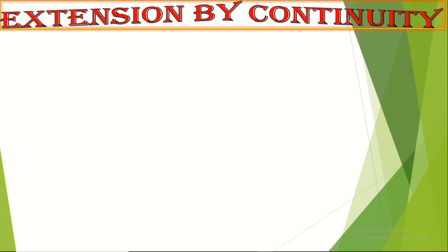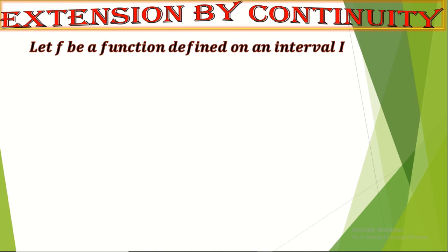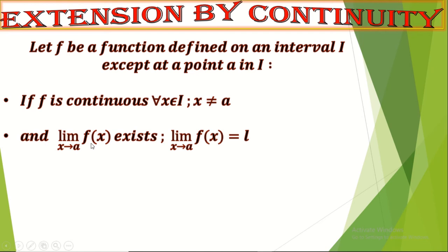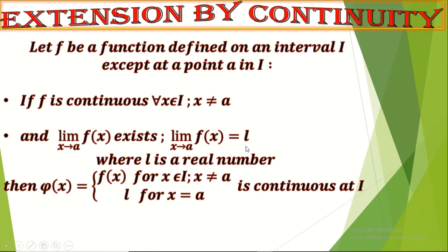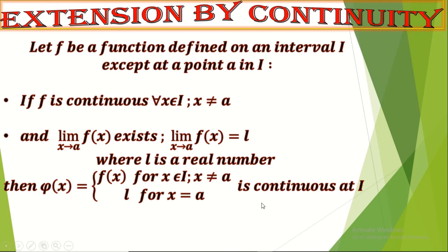What about extension of a function by continuity? If we have a function f defined on an interval I, which is continuous on this interval except at a point a, and if the limit of f(x) as x→a exists and equals l (a real number), then we say that f can be extended by continuity. Its extension is a function φ(x), which equals f(x) for every x in I different from a, and equals the limit l for x = a. Then φ(x) is continuous on I, in particular at point a, and φ is called the extension of f by continuity.